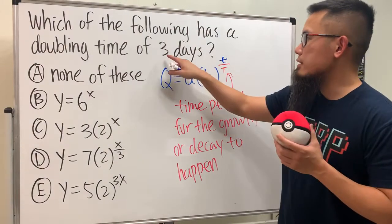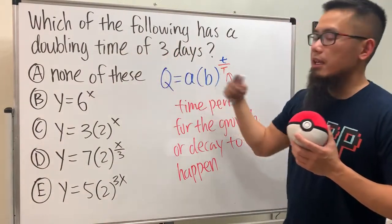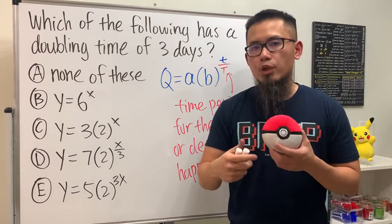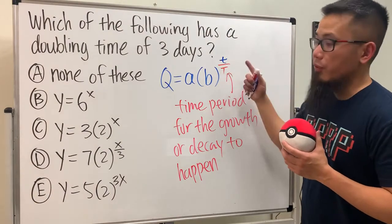And because right here it says three days, doubling time of three days, it means it will take you three days for the quantity to be doubled. So we must have a divided by three right here for the exponent.